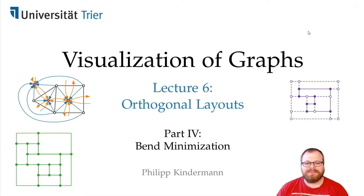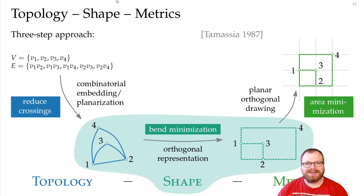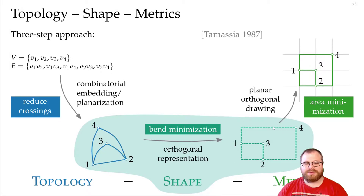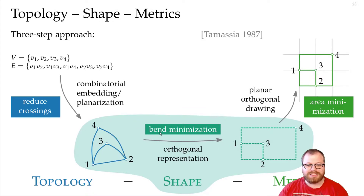We now want to solve the bend minimization problem. This is still the second part — the shape step of our topology-shape-metrics approach. We have defined what an orthogonal representation is and how to check if it is correct, but not yet how to find one where the number of bends is minimized. That we want to do now.